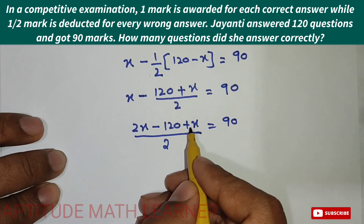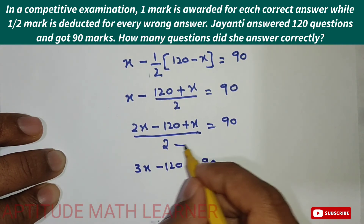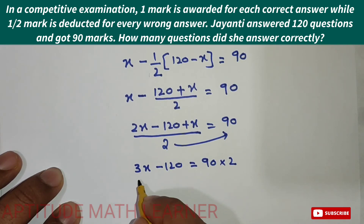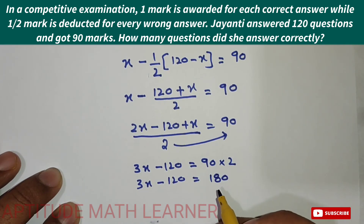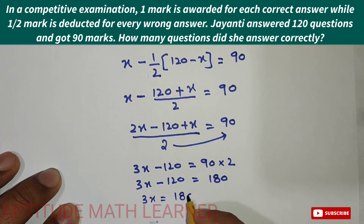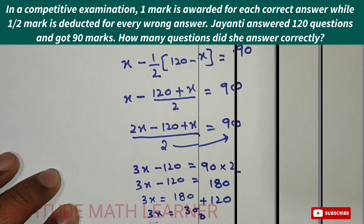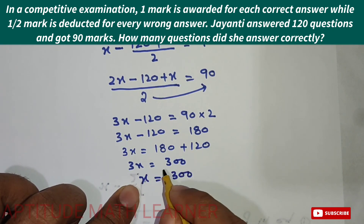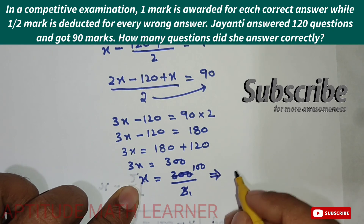Combining like terms: 2x plus x gives 3x, so 3x minus 120 equals 180. Then 3x equals 180 plus 120, which gives 3x equals 300. Dividing both sides by 3, x equals 100.